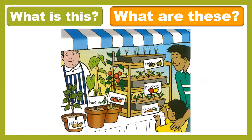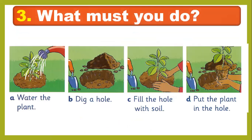Today we practiced 'What is this?' and 'What are these?' Try to look at the pictures on page 96 and make sentences: 'What is this plant?' — 'This is a potato plant.' 'What are these plants?' — 'These are onion plants.' We also looked at how to make a new plant.